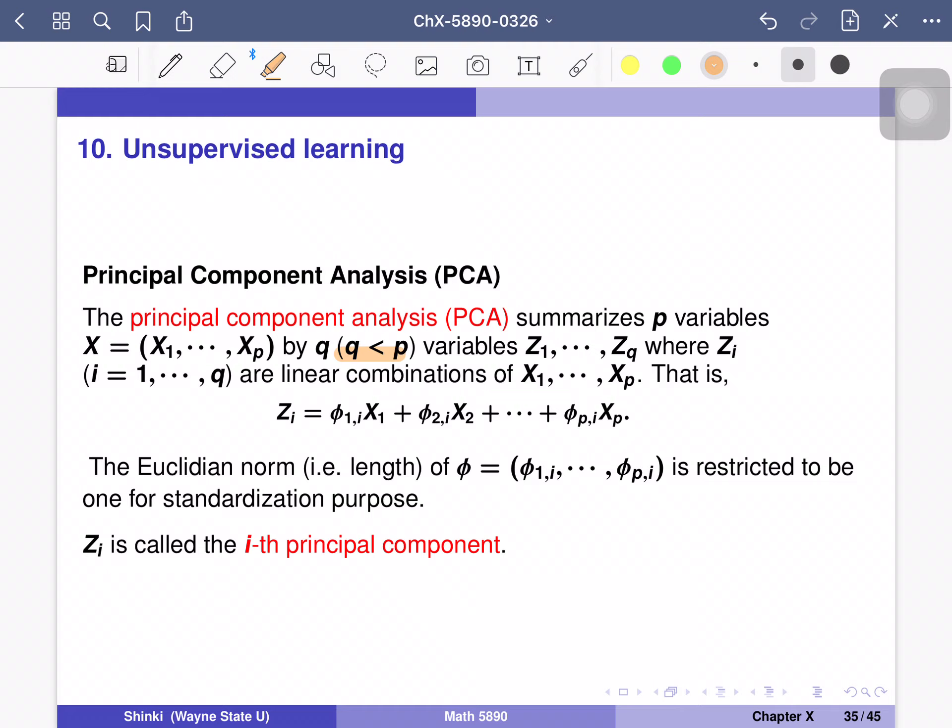So each of the zi is linear combination of x1 to xp here. If the coefficients are very large, zi can be very large. So we standardize this, and usually we restrict the size of phi is equal to 1.